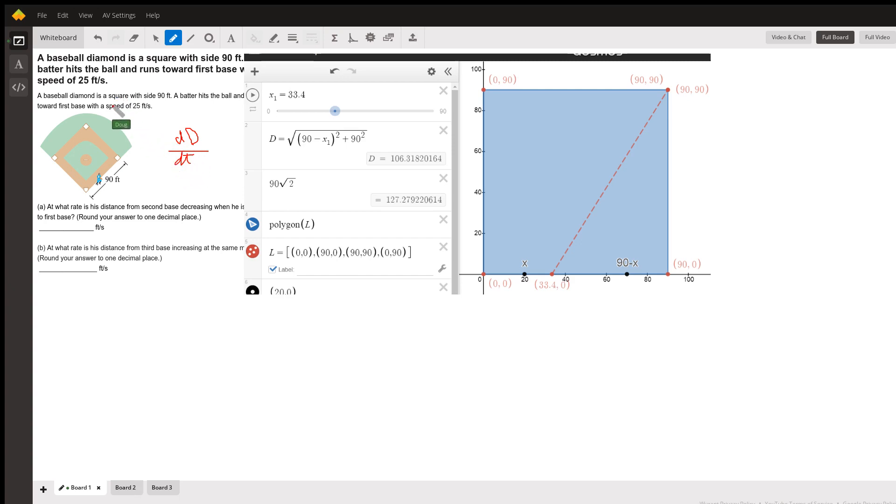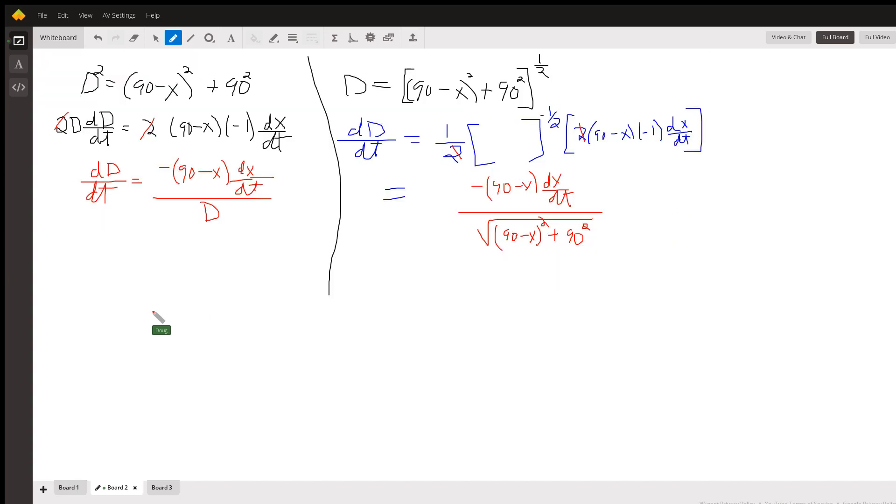This information right here tells us that dx/dt is 25 feet per second, where again I let this distance, the distance the runner has actually run, be x. So this distance is 90 minus x, and this of course remains a constant 90. So let's go to board two.